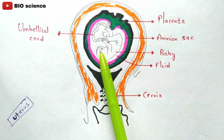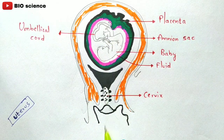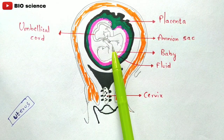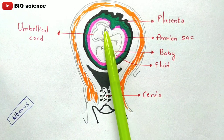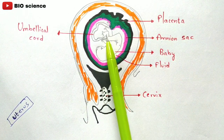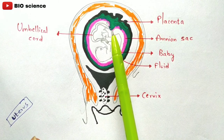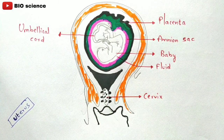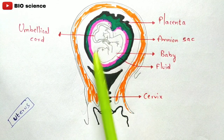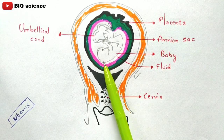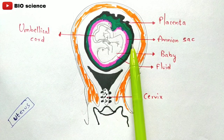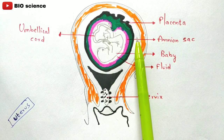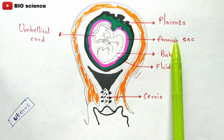Once contraction is done, the baby is pushed towards the vagina — towards the external environment. Once relaxation is done the baby is stable, and once again contraction occurs the baby is pushed out further. The pink color layer shown here is called the amnion sac.